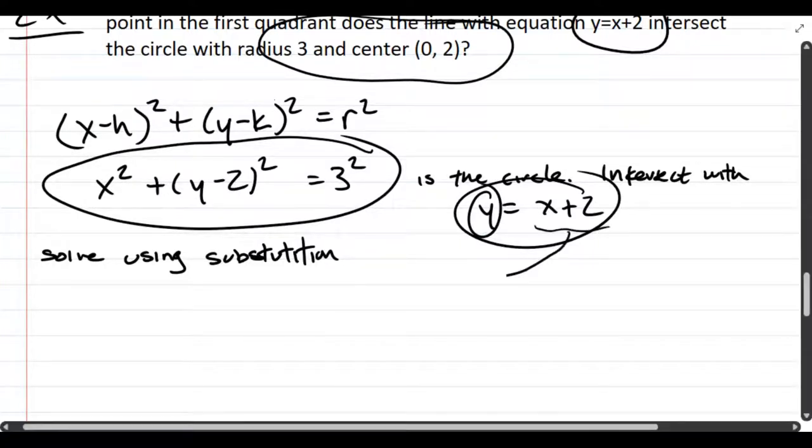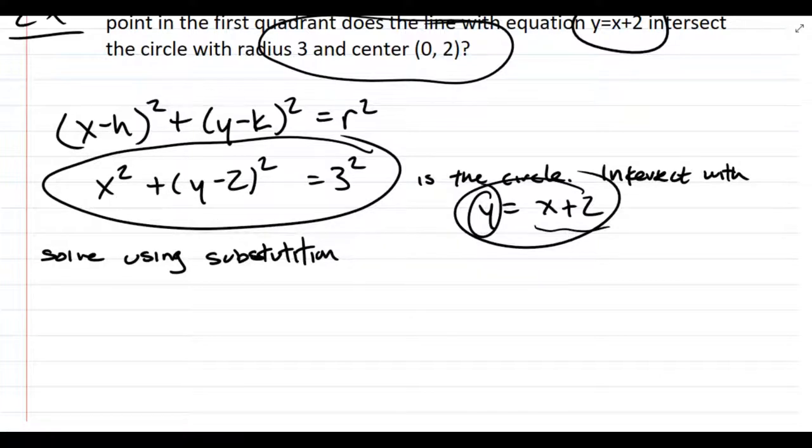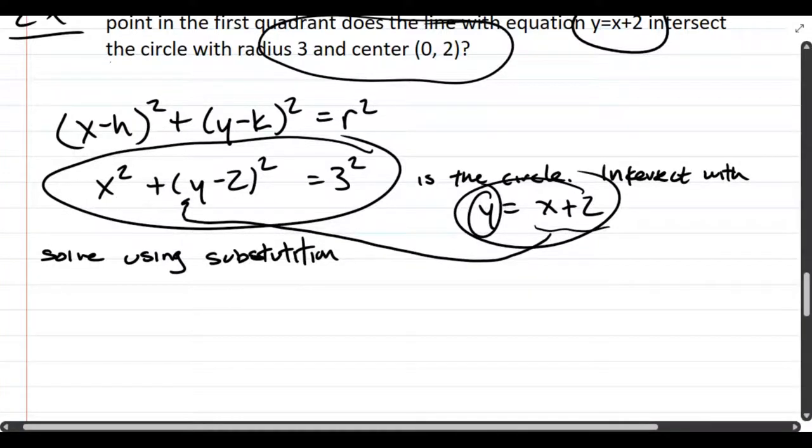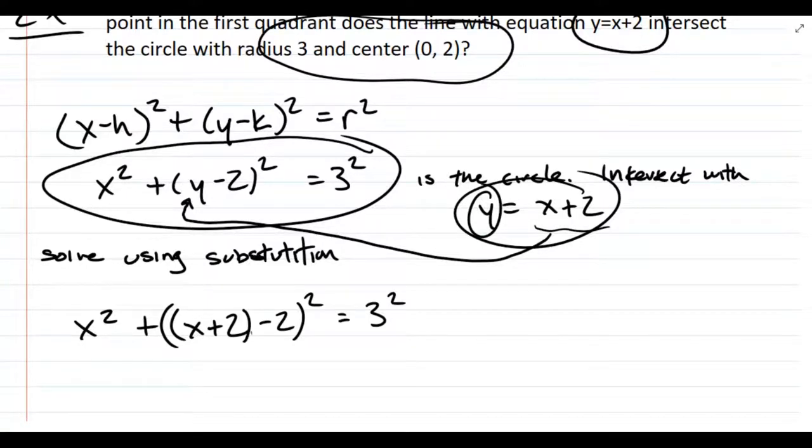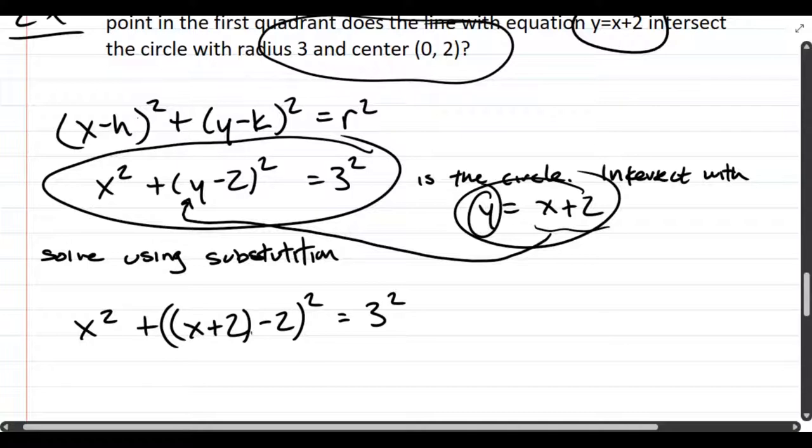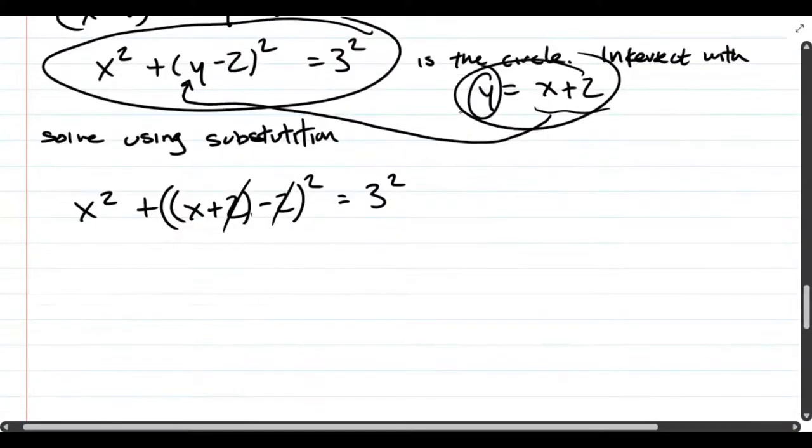We're going to take x + 2 and plug it in where we see y. We're going to substitute out y and replace y with x + 2. So that y becomes x + 2, and there's still that minus 2. We have x + 2 - 2, so those actually cancel out. I believe on your problem they will too—they may not both be 2's, but they should cancel out.